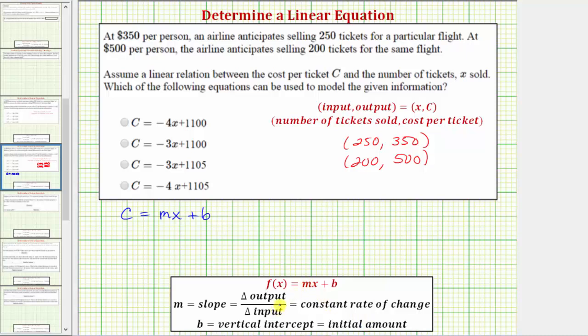So let's first determine the slope by determining the change in the cost per ticket divided by the change in the number of tickets sold. For our linear equation, we'll have M equals the change in C divided by the change in X. To find the change, we'll take the values of the second ordered pair and subtract the values from the first ordered pair. So the change in cost would be 500 minus 350. And the change in X, or the change in the cost per ticket, is 200 minus 250. So simplifying, we get M equals 150 divided by negative 50, which equals negative 3. And the units here would be dollars per ticket.